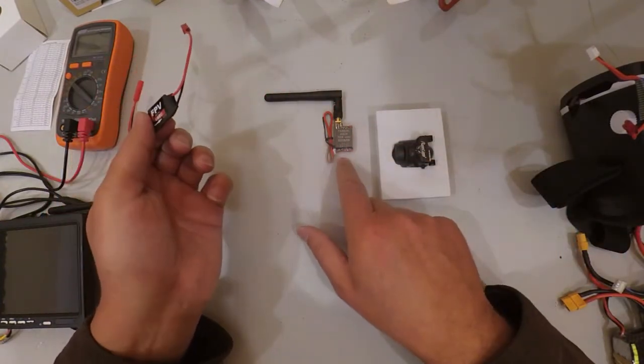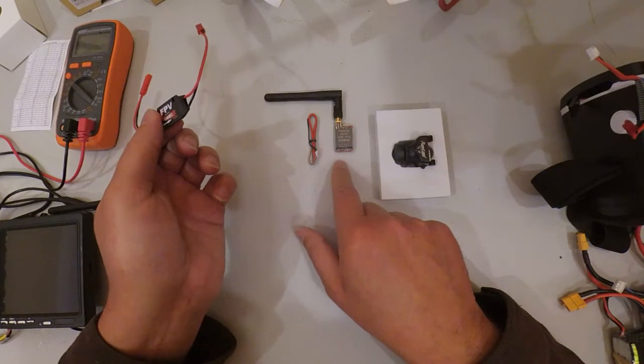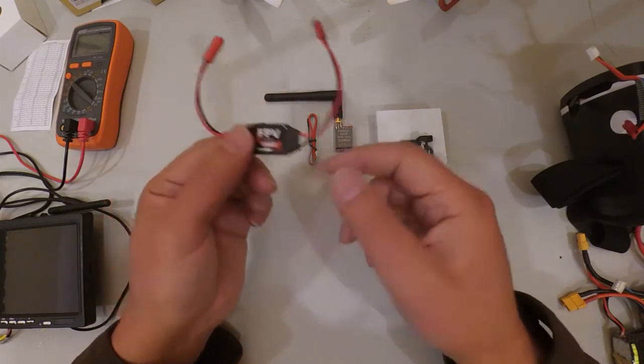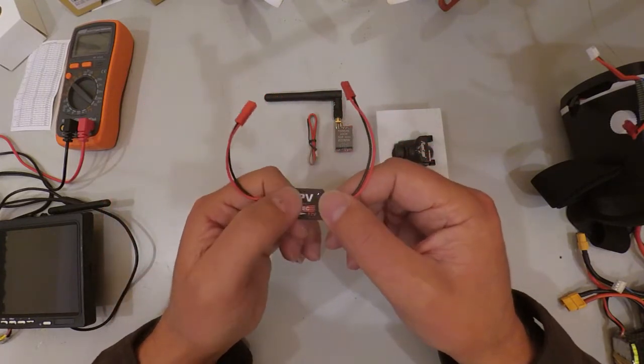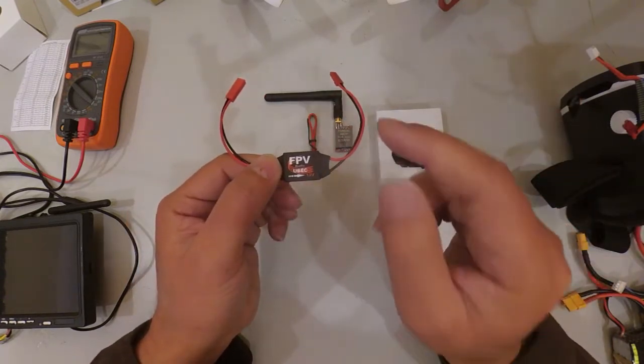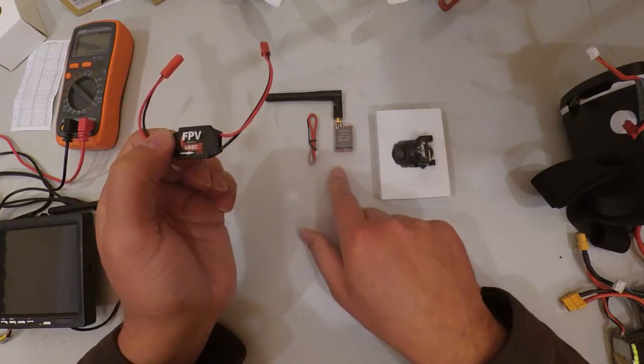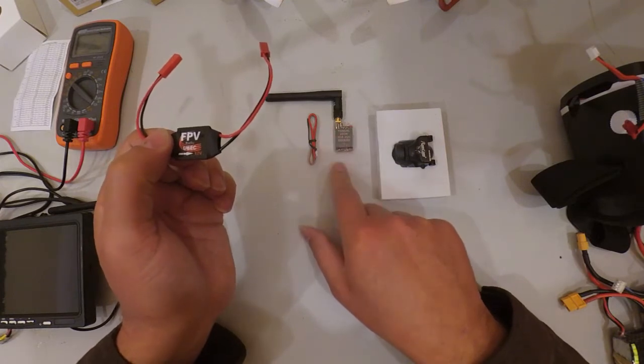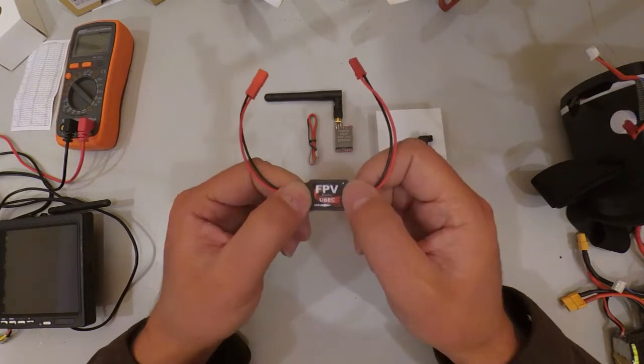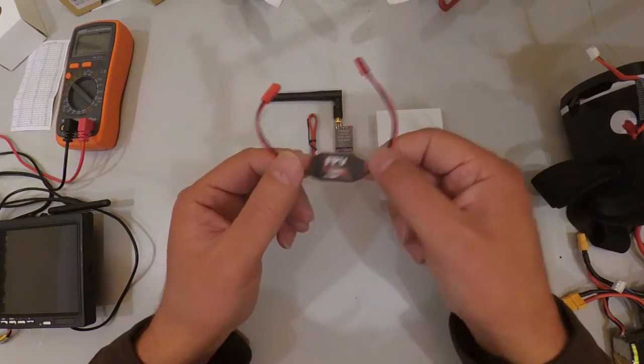The reason I like this transmitter is because it takes voltages from 7 to 24 volt, anything from a 2 cell all the way up. Should you get a transmitter which doesn't take a varying number of voltages, you may need something like a UBEC which converts the voltages to 12 volt or 5 volt.